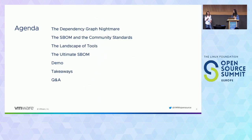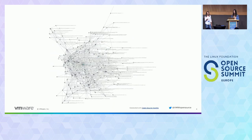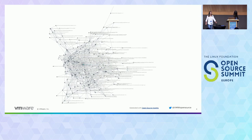Let's try with one more dependency graph — even more beautiful. Can somebody name the project? An open-source platform for managing containerized workloads and services — a very popular one. [Audience: Kubernetes.] Kubernetes! You win the same prize. We'll see you tonight.